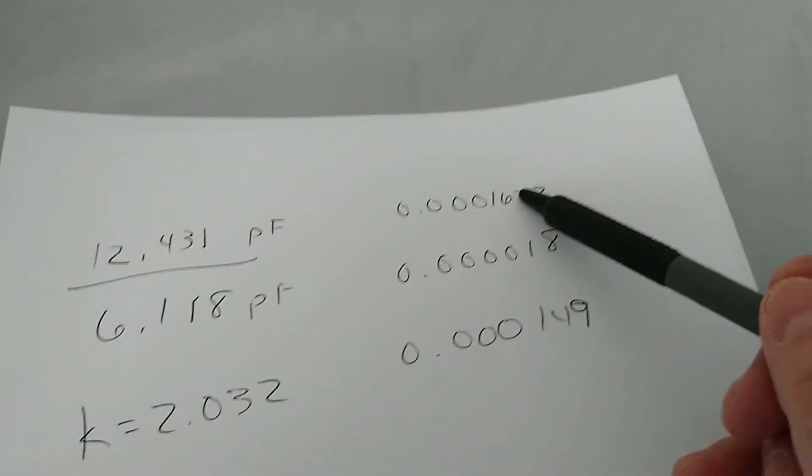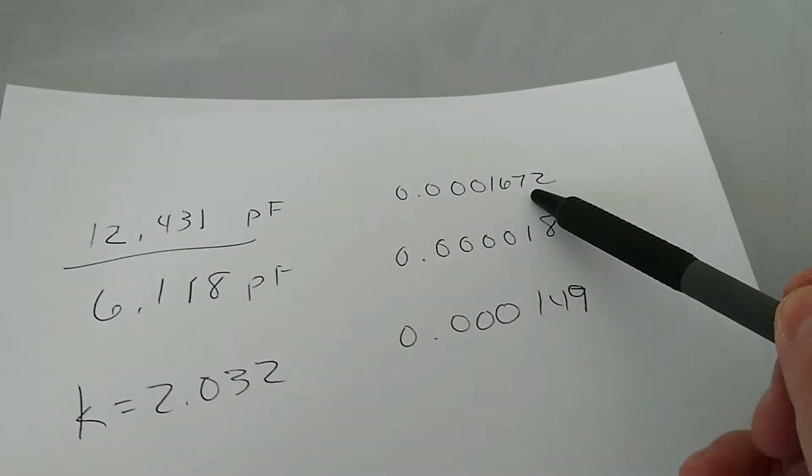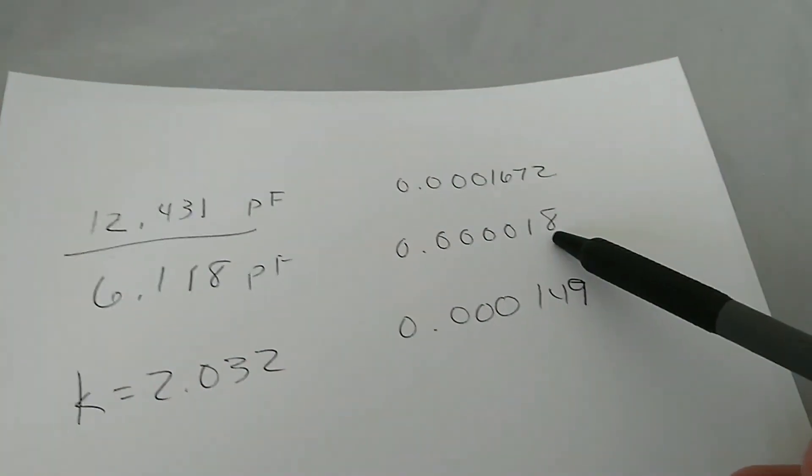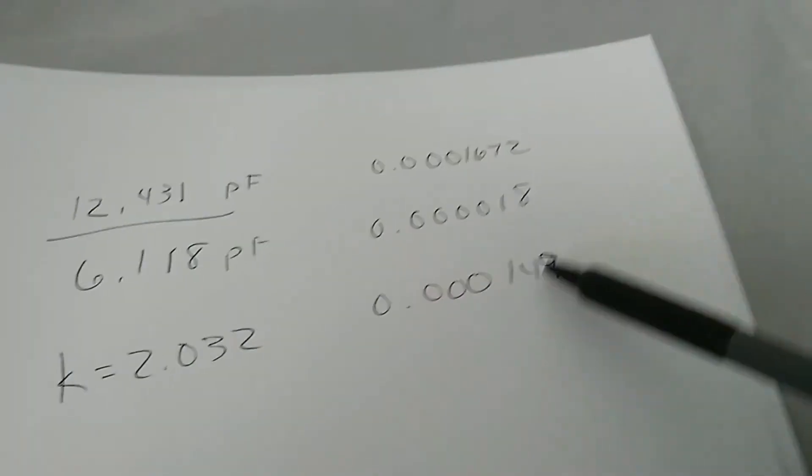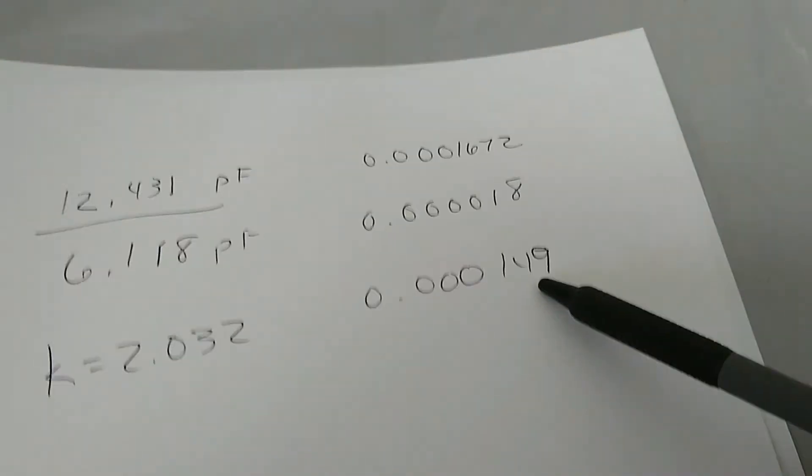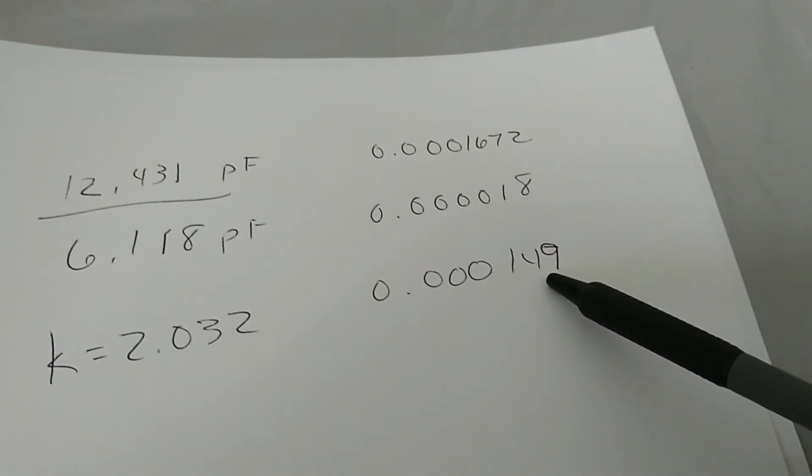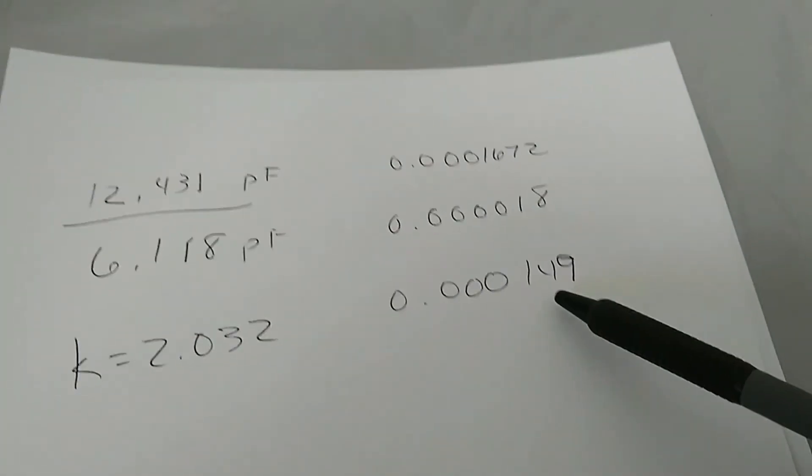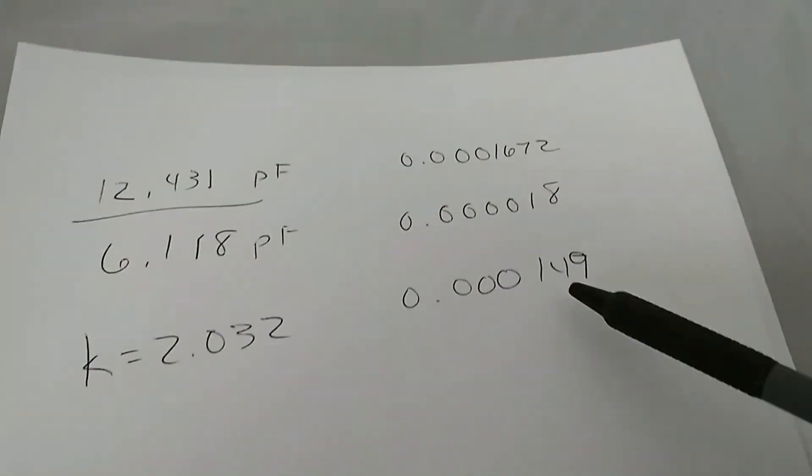We can also take the dissipation factor that we measured with the sample, subtract the dissipation factor in air. This gives us the dissipation factor of the material. So 0.0001, somewhat typical of Teflon, could be a little bit lower than that.